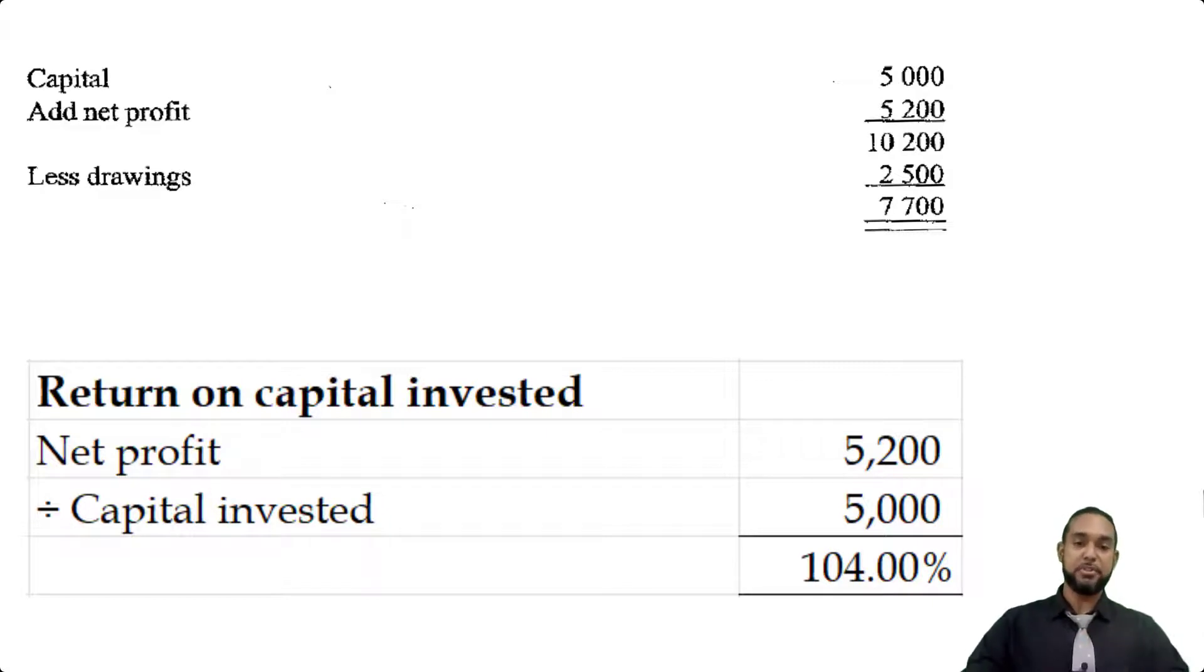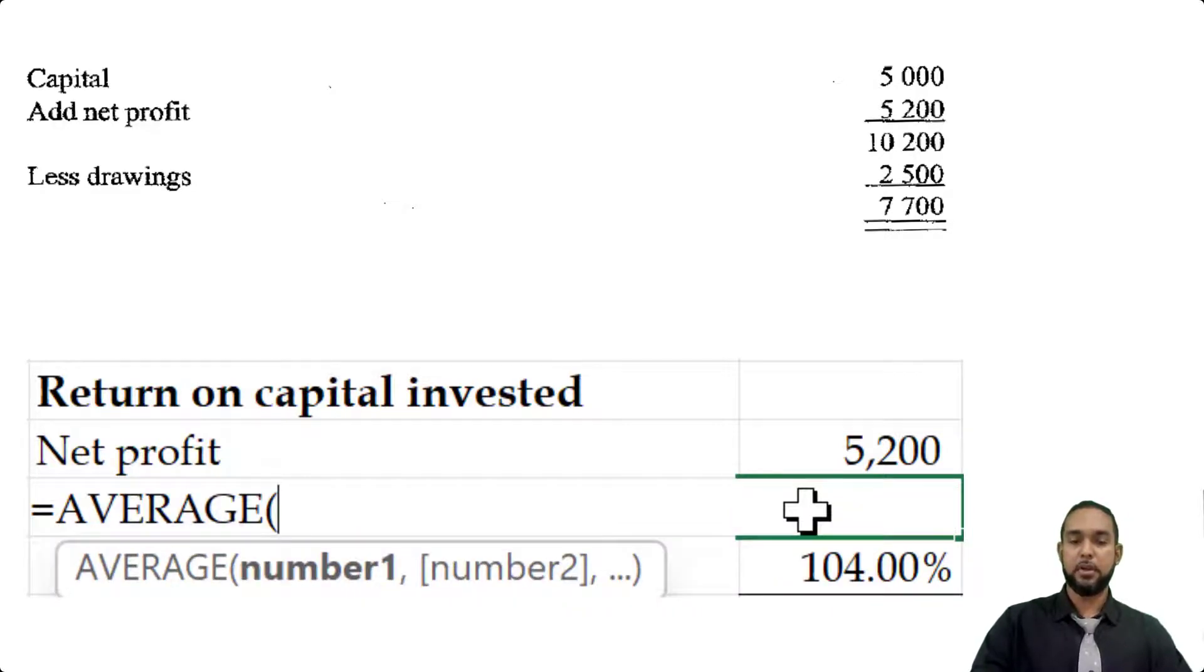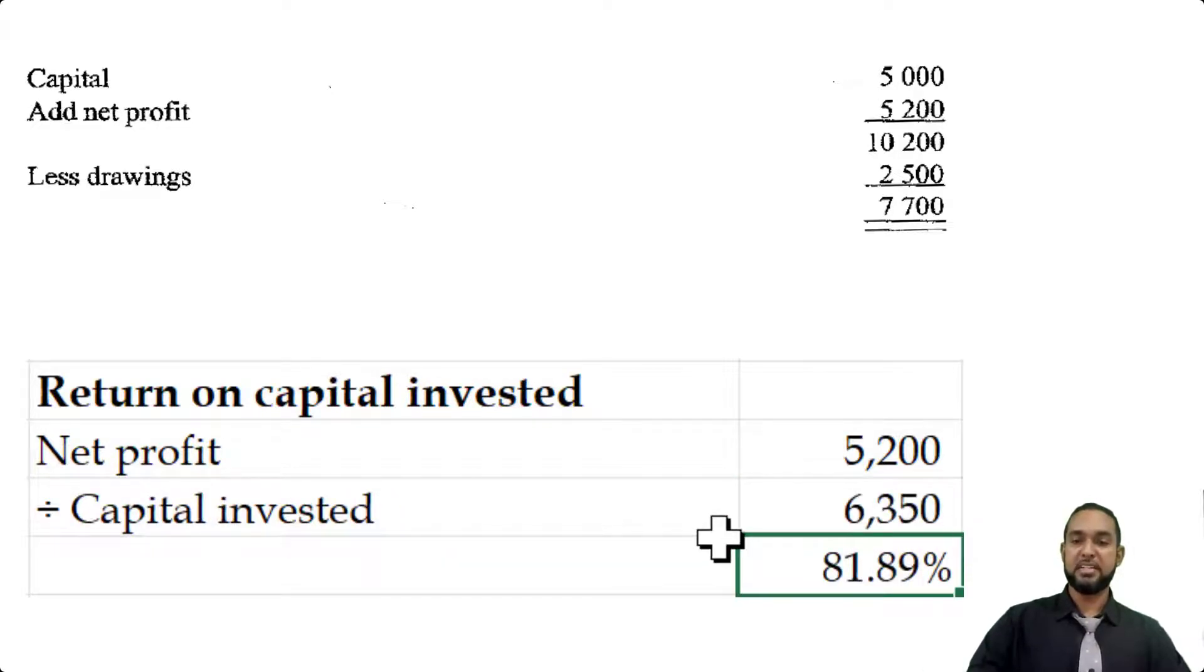The other way you could do it is to use average capital. To find average capital we'd have to add opening capital of 5,000 to closing capital of 7,700 and then divide by 2. So you're going to get 6,350, which gives a return on capital invested of about 81.89%, approximately 82%. So it depends on the information they give you, but if they don't specify which formula to use, you are free to use either one. I kind of prefer opening capital because that's what you started with.